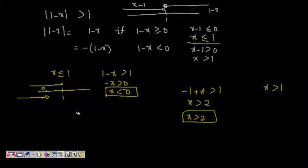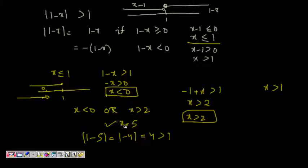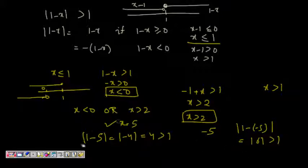So the combined solution is: either x less than 0 or x greater than 2. Let's verify: for x = 5, mod of 1 minus 5 is mod of minus 4, which equals 4, greater than 1 — correct. For x = minus 5, mod of 1 minus (minus 5) is mod 6, which is greater than 1 — correct.